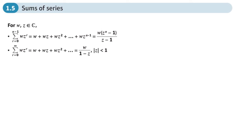This is the fifth section of chapter 1 from the Core 2 book on complex numbers, and here we're looking at the sums of series. You would have done the sum of a geometric and arithmetic series in the Pure Year 2 book. Here we look at the sum of a series of complex numbers, and you can see there are two results here which we can just quote — they don't need to be proved.